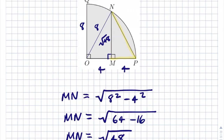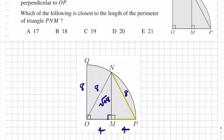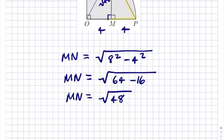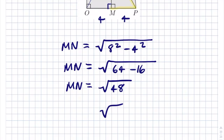Now we need the length of PN. You should be able to see that triangle PNM is the same as triangle OMN — they have the exact same base and height, so the same hypotenuse. Therefore PN = 8. Since √49 = 7, √48 is just a little less than 7, so we can approximate √48 ≈ 7.